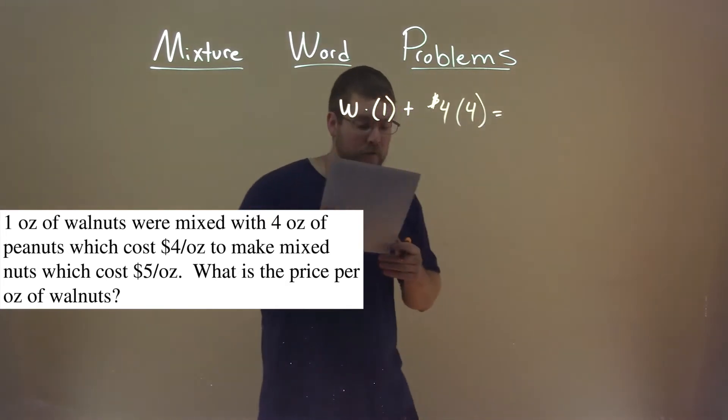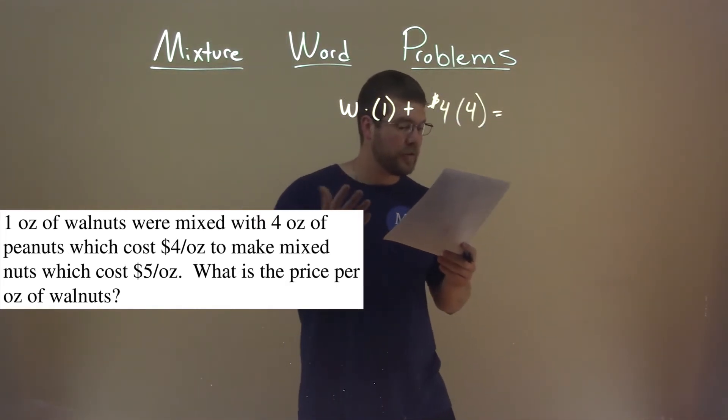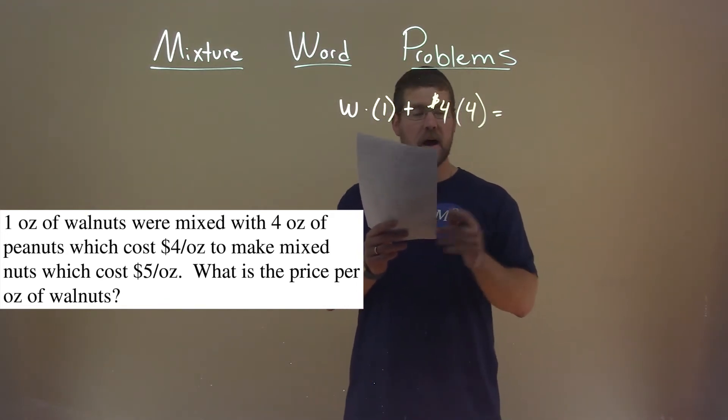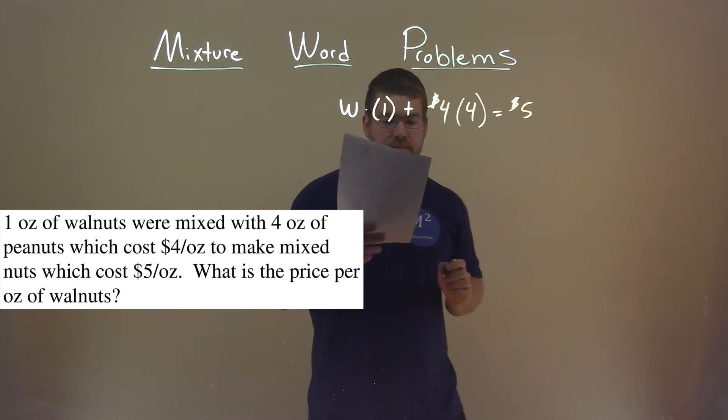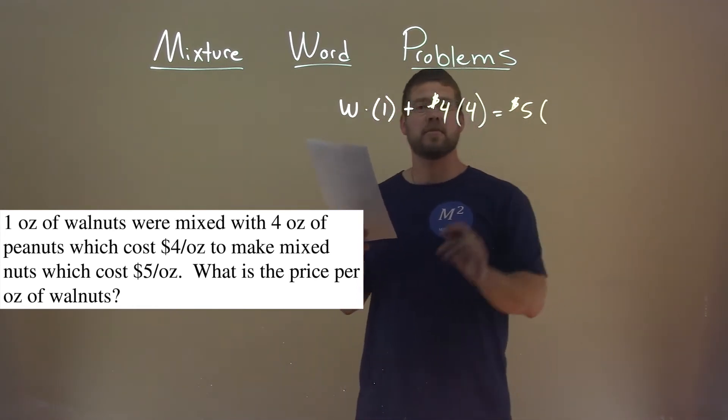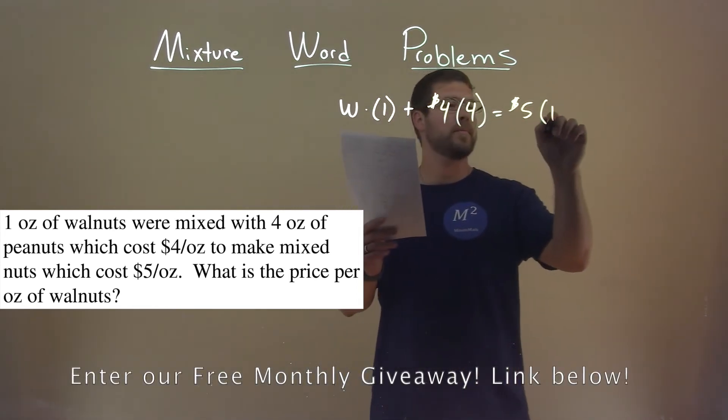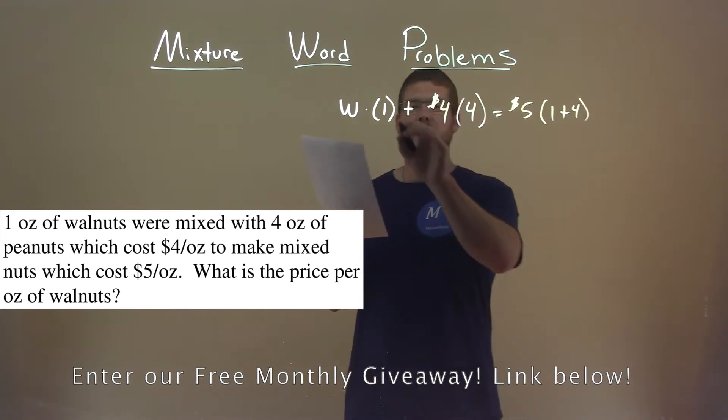That equals a final mixture, which we know costs $5 per ounce. And how many ounces of the final mixture? Well, it's one plus four, combining two ounces, right? These are ounces.